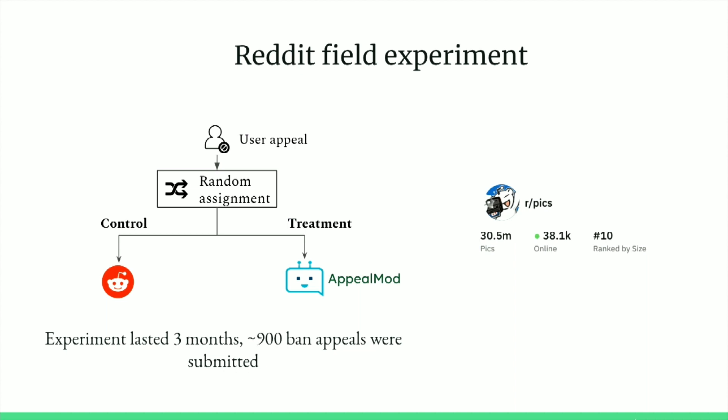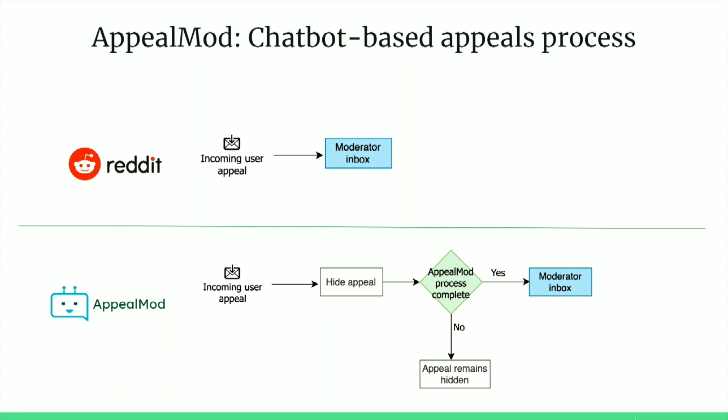To test whether self-selection would work, we conducted a field experiment on r/pics, one of the largest Reddit communities. Appeals were randomly assigned to either the control arm — Reddit's existing process — or the treatment arm, which was the newly designed Appeal Mod process. The experiment lasted about three months. Approximately 900 appeals were submitted. In Reddit's existing process, appeals go directly to the moderator's inbox, but with Appeal Mod, appeals were initially hidden from moderators until the user completed the process, then sent along with the additional information provided.